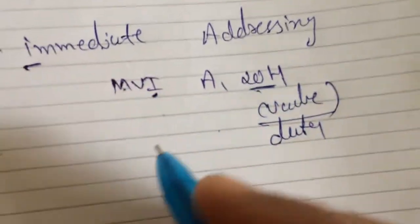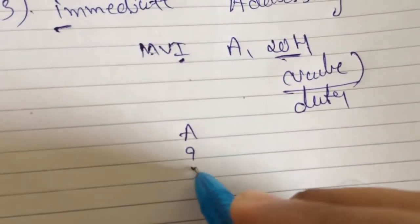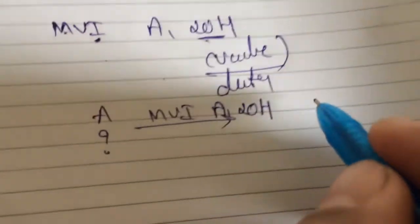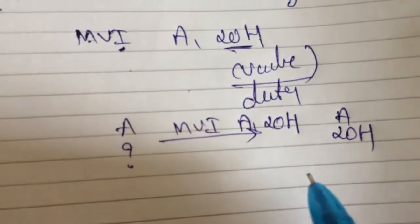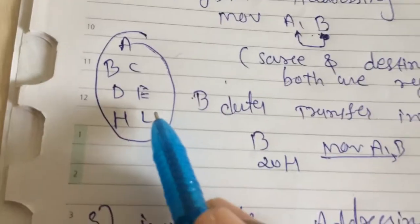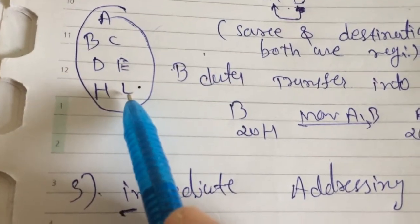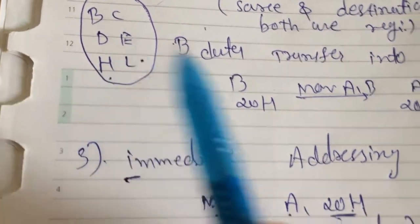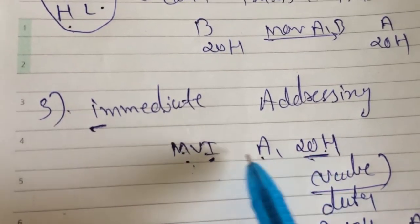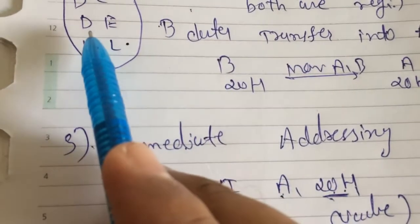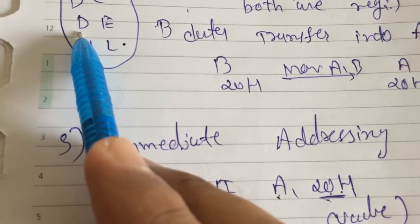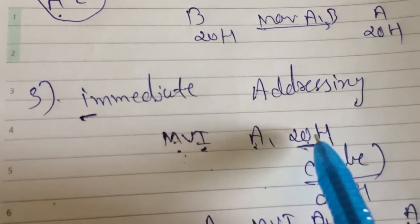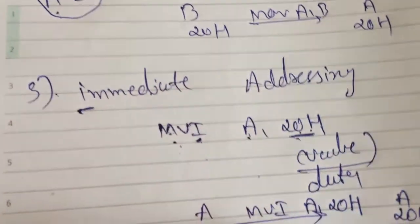MVI A, 20H — after execution, whatever data A previously contained, A will now contain 20H. In this way we can initialize any register. If you want to load 20H into L, write MVI L, 20H. For H register, write MVI H, 20H. Similarly, to transfer any value to D register, write MVI D, followed by any value such as 20, 30, 40, or 50. This is immediate addressing mode.